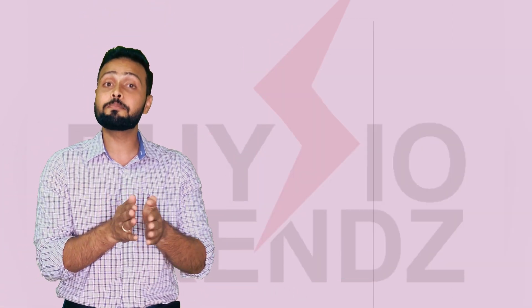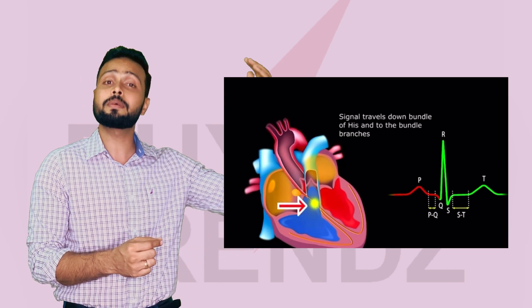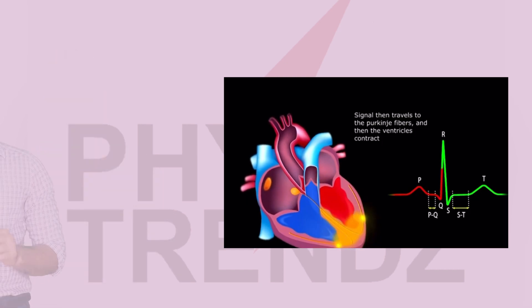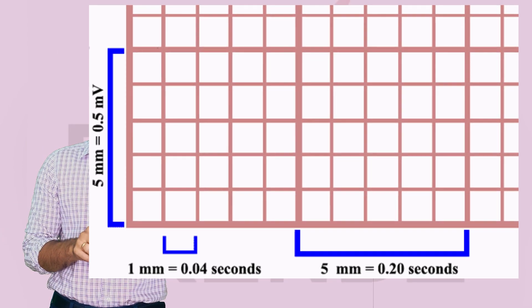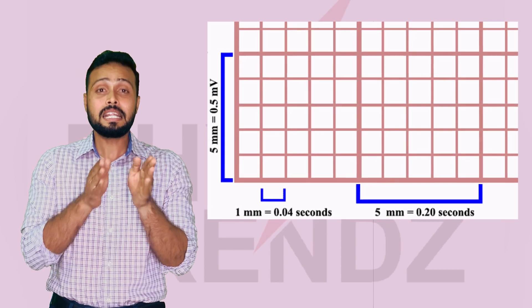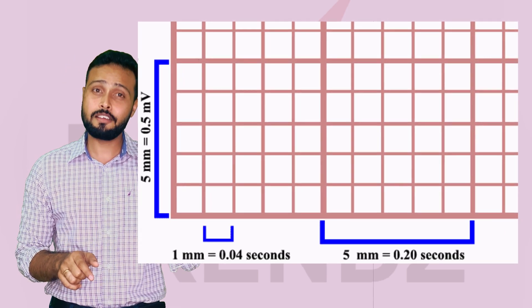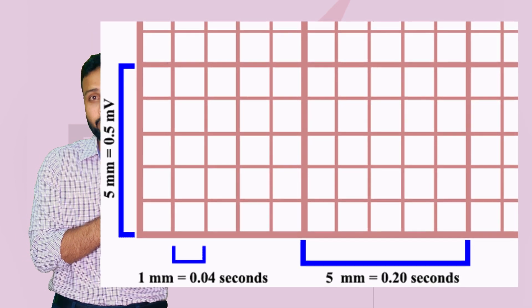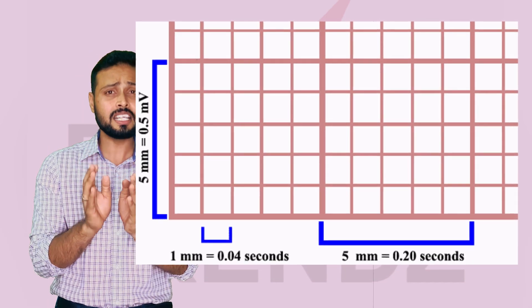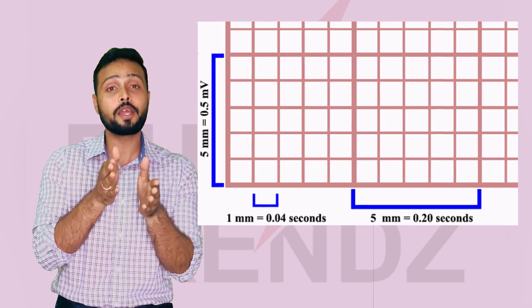Now let's understand the PR interval. The PR interval is the duration or time taken by the impulses to travel from the atria through the conduction system to the Purkinje fibers. The normal duration for this is 0.12 to 0.20 seconds. On an ECG, each small box is 1 mm, and five small boxes together make one large square of 5 mm. One small box represents a duration of 0.04 seconds, so combining 3 to 5 small boxes gives us approximately 0.12 to 0.20 seconds for the PR interval.